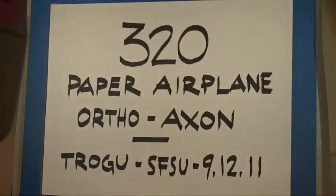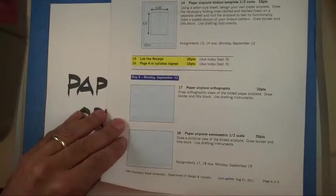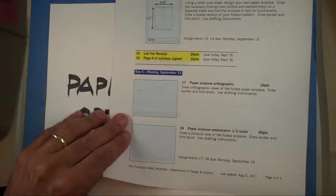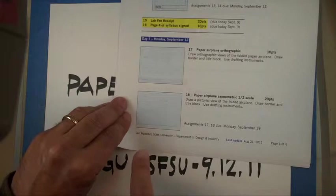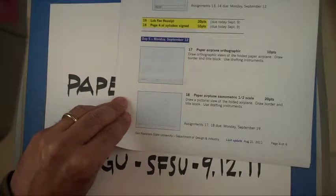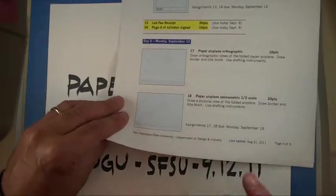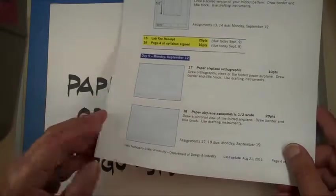Today we're going to draw the airplane, paper airplane, and we're going to do two drawings, the orthographic views of it and also an isometric view, and we're going to use tools. We're going to go a little bit back and forth between using tools and using freehand drawing.